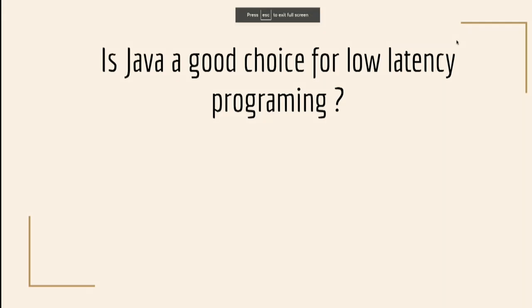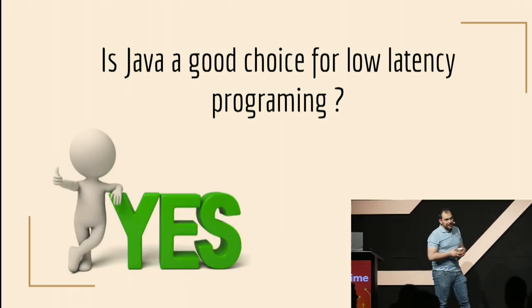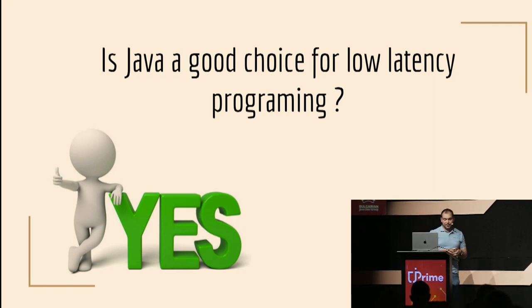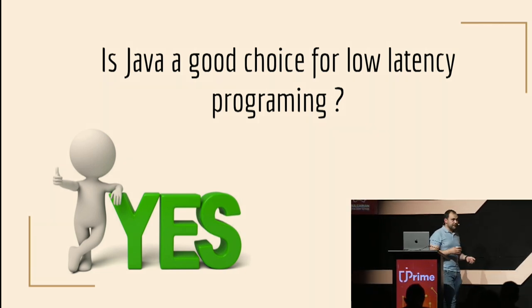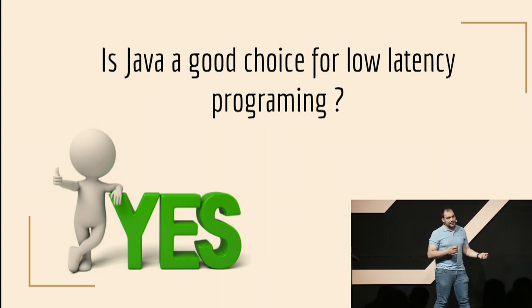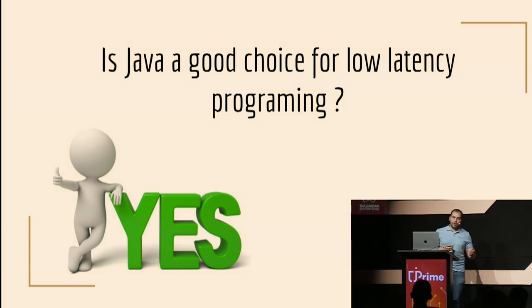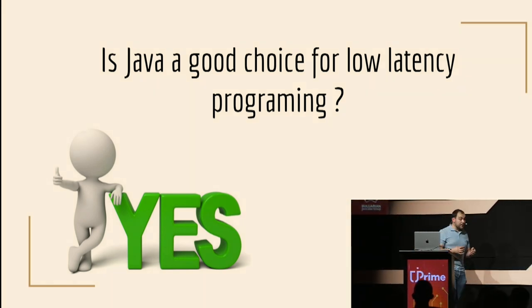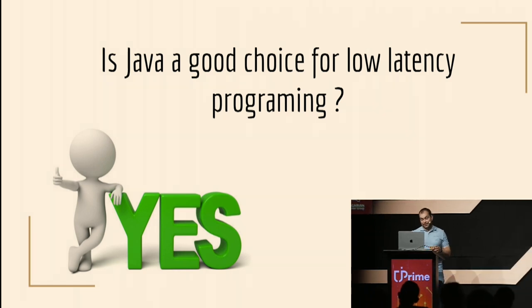Let's try to answer the question from the beginning of the presentation: is Java a good choice for low latency systems? Based on the experience I have from the last two years, the answer is yes. Many crypto exchanges are using Java for all of their data. But there are specific technologies for low latency systems — there are brokers designed for low latency. You cannot just use JSON. There are many libraries that can deserialize data faster than Jackson — you can use Chronicle Wire. If you want to go with low latency systems, please don't use JSON.